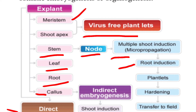That is called root induction. From the root, you can produce a new plant. And from the root induction, plantlets are produced and the plantlets are exposed to hardening — the transfer of plantlets to the nursery beds, and from nursery beds to the fields.